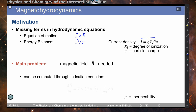To describe these terms, we need to describe the magnetic field, and the magnetic field can be computed through the induction equation. The partial derivative of the magnetic field with respect to time is given by the curl of the cross product between the velocity and the magnetic field vectors, plus a term including the permeability and sigma times the Laplace operator of the magnetic field.